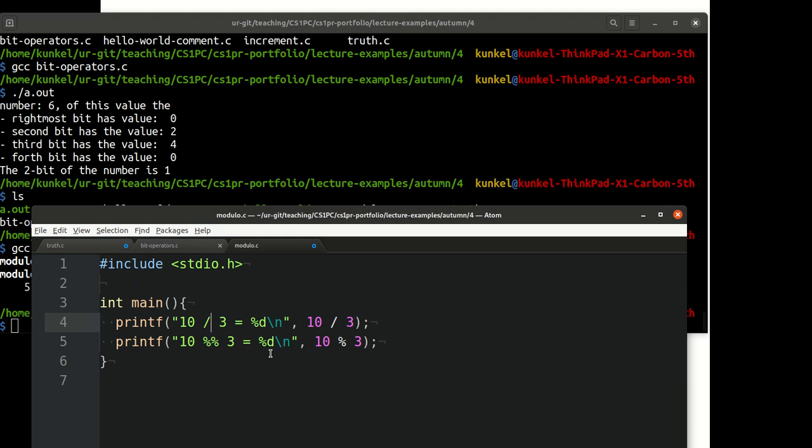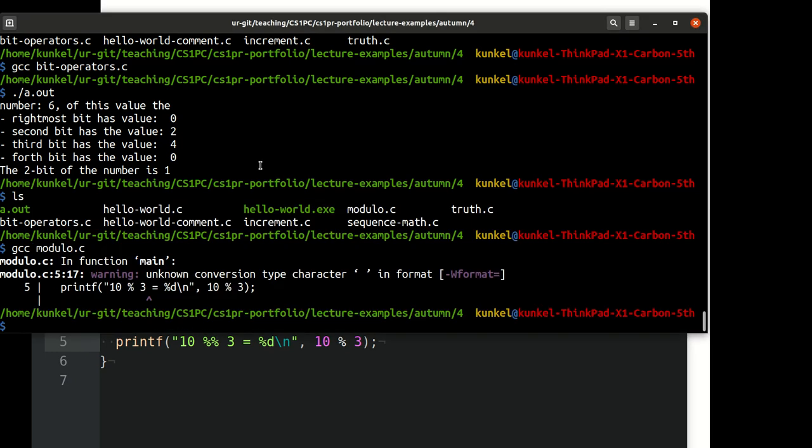I used the percent character. Percent character means it is part of our format string. If I want to print a percent character itself, I have to use percent percent, because percent tells the compiler something that stands next to it will be used to format the string. And in this case, I wanted to print percent. Okay. Let's do it.